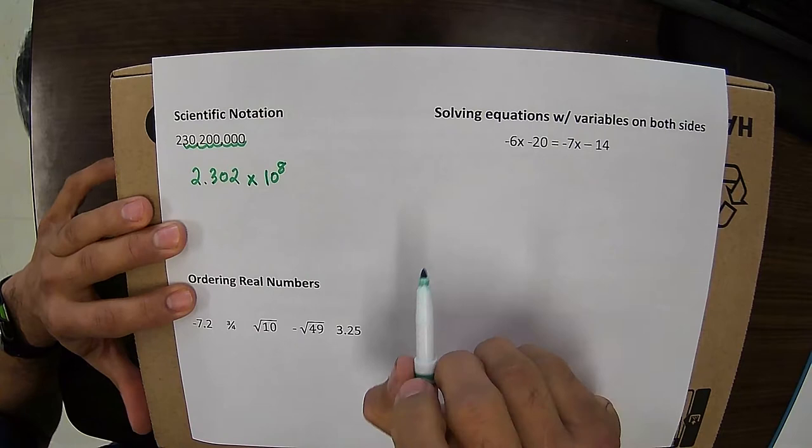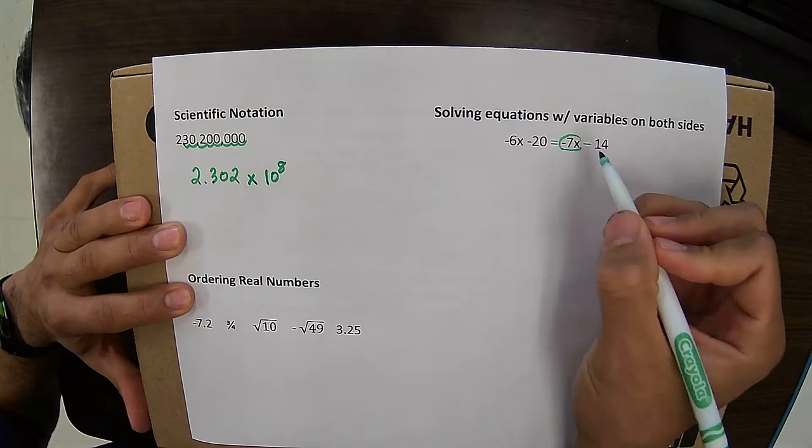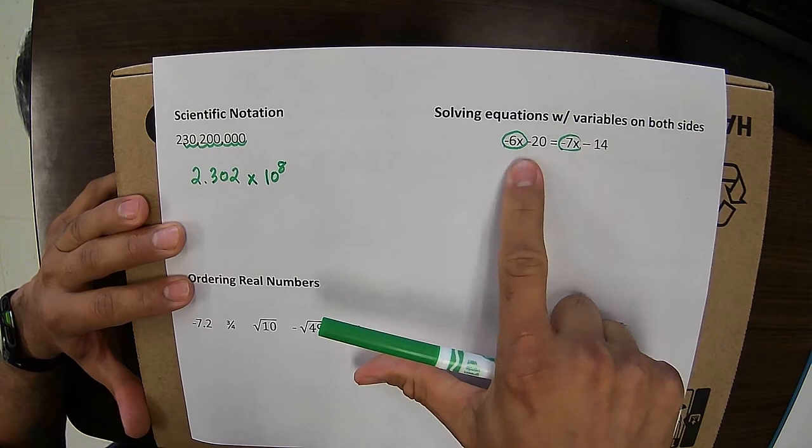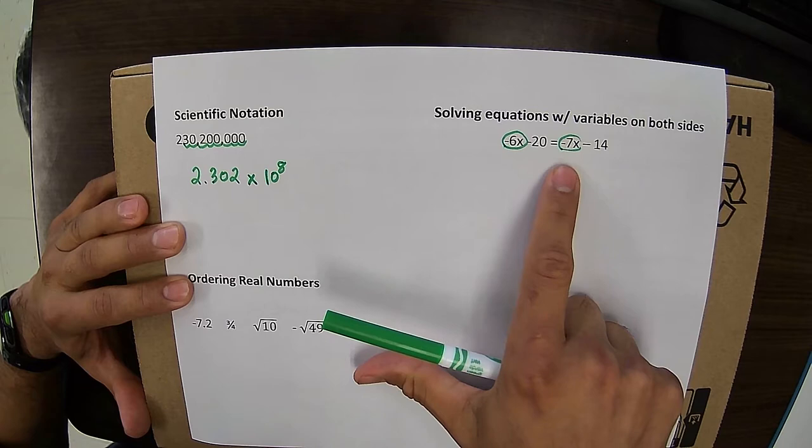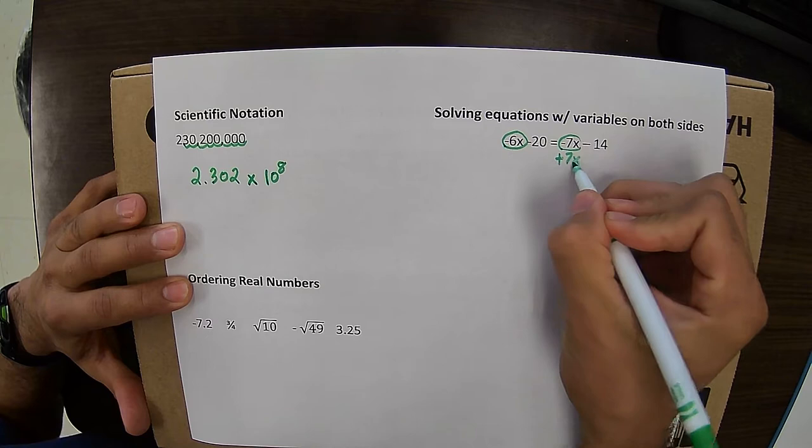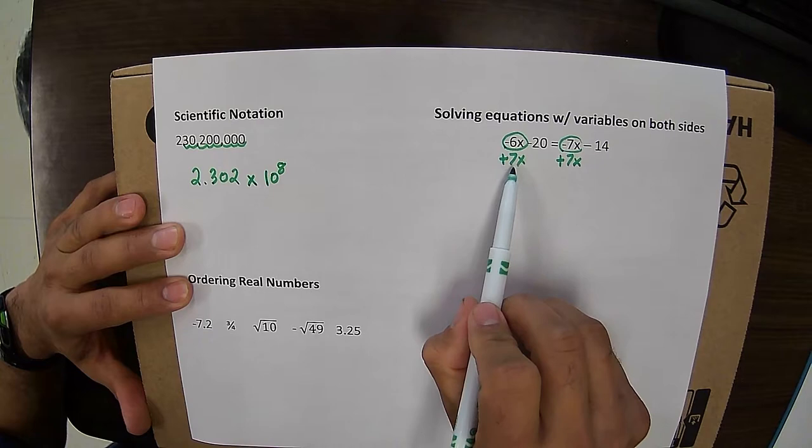Here we're trying to solve for x. We're looking at our two variables. I have a minus 7x and I have a minus 6x. Since they're both negative, the minus 7x is actually the one with the lower value. And that's the one we want to cancel out. So to cancel out a minus 7x, I'm going to add 7x to both sides. A negative 6x plus 7x will just give me x.